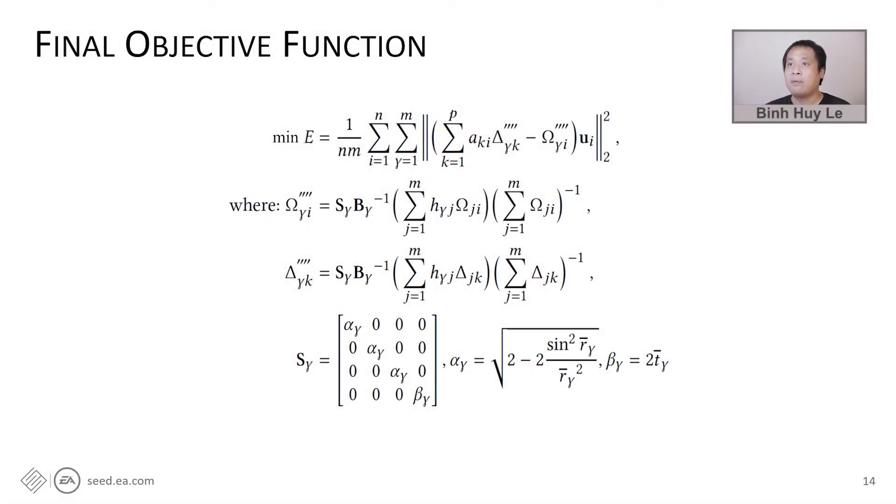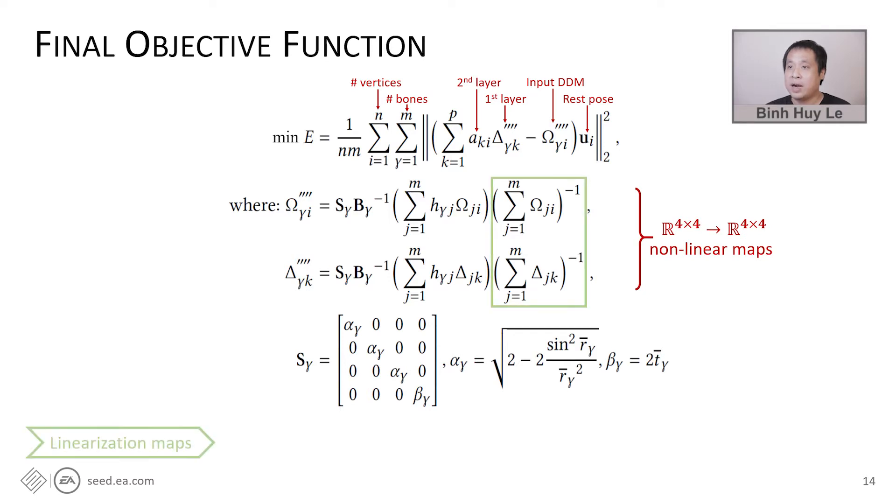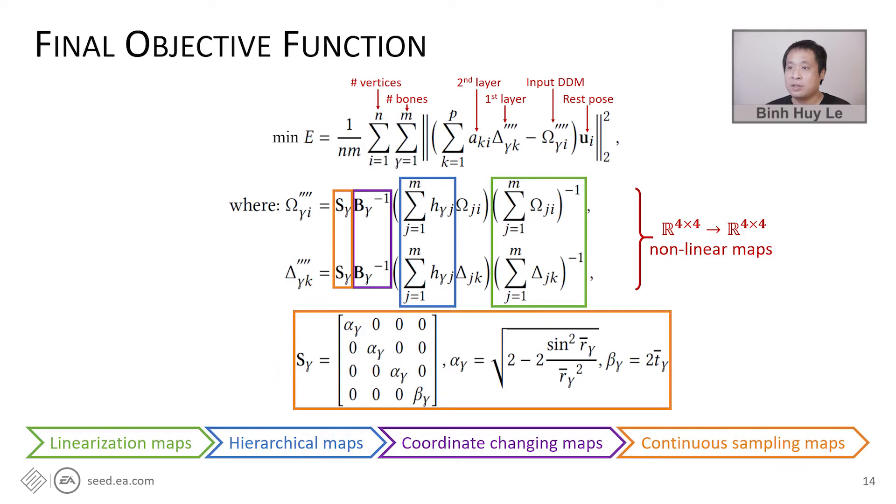Putting everything together, we have this objective function. I won't explain all notations, but I just present some interesting highlights. Here, A is the scalar LBS weight of the second layer. Delta 4 prime is the mapped DDM weight of the first layer. Omega 4 prime is the mapped weight of the original input DDM model. And U is the vertex position at the rest pose. Our compression error E is computed over all n vertices by sampling all n bones. And note that the integration has already handled continuous poses, so the number of poses does not appear in our final equation. There are combinations of four maps that we have just presented. Here are the linearization maps, the hierarchical maps, the coordinate changing maps, and the continuous sampling maps.